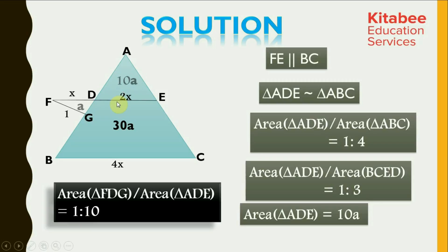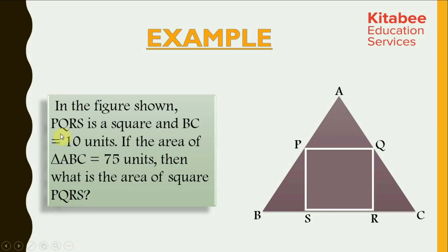I hope this problem on similarity is clear, even though it is a difficult problem. Whenever lines are parallel, similarity is definitely applied. In this particular problem, we had to apply similarity twice. Now, let's look at the last example. PQRS is a square and BC is equal to 10 units. If the area of triangle ABC is equal to 75 units, then what is the area of the square PQRS?